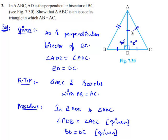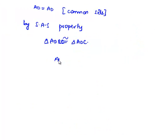then their corresponding sides and corresponding angles will be equal. Therefore, we can equate side AB to side AC, which is the required proof.